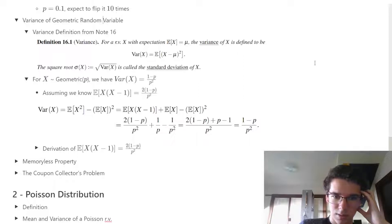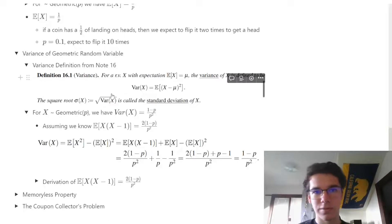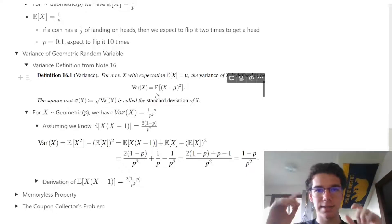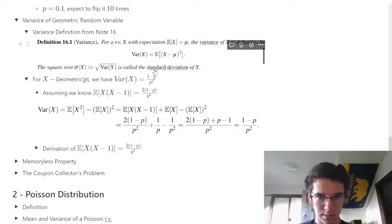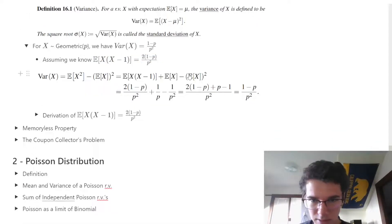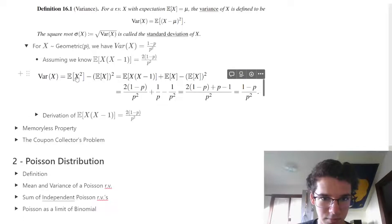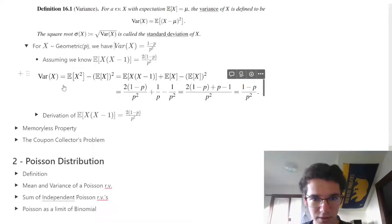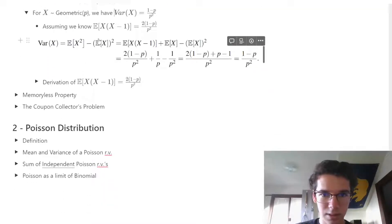We typically use another formula for variance when proving things, which states that the variance equals the expectation of x squared minus the expectation of x, quantity squared. We take this and expand it into E[X(X-1)] form.